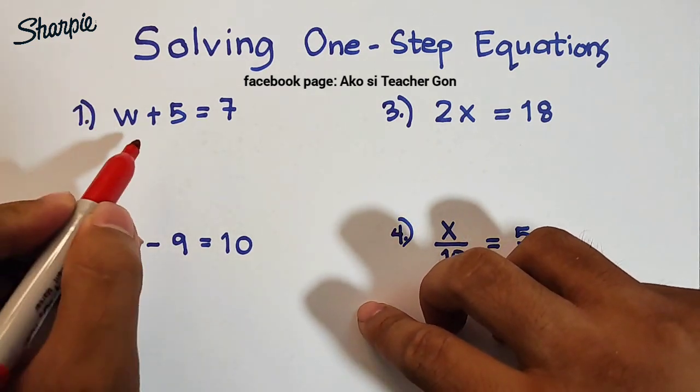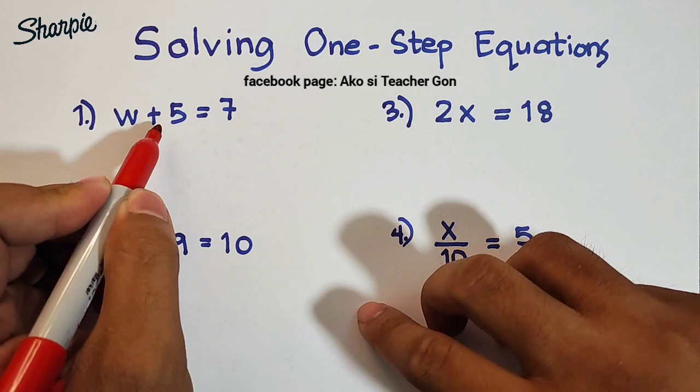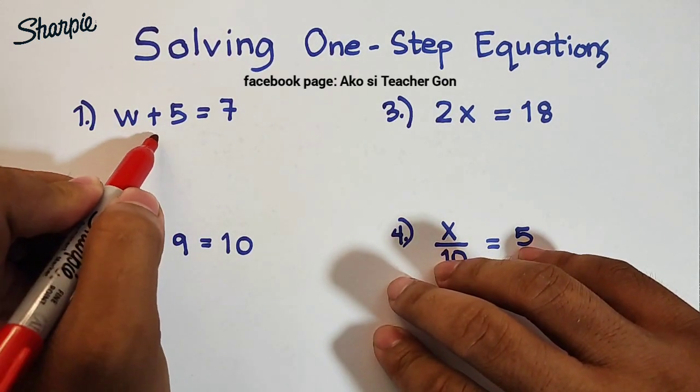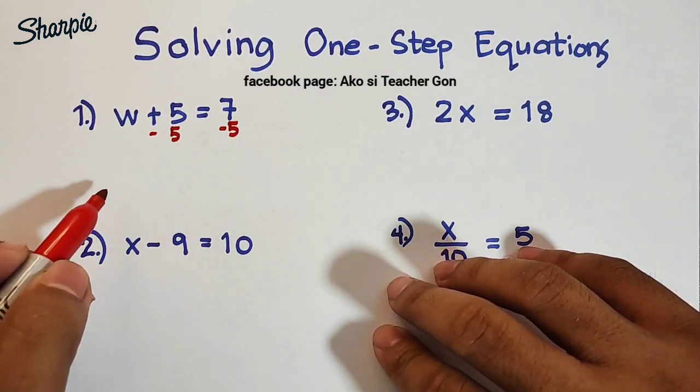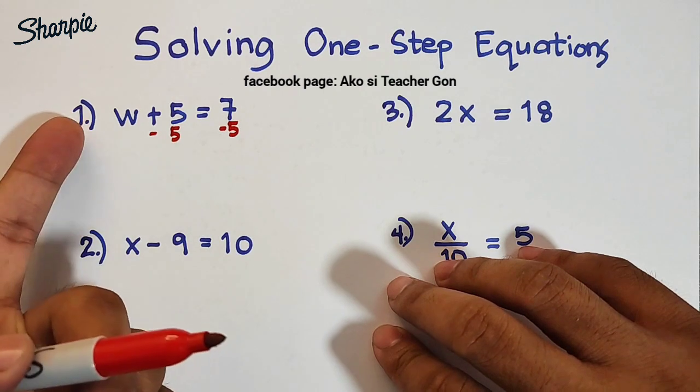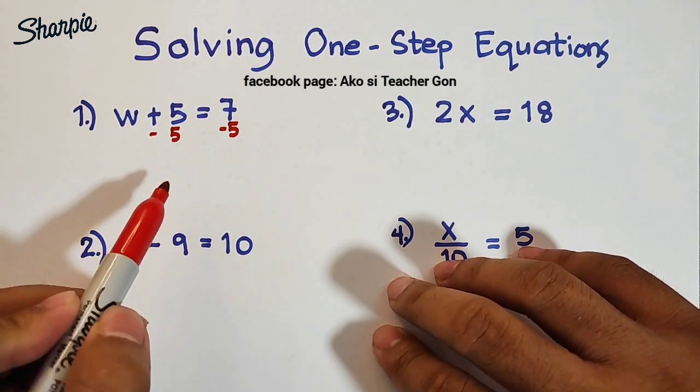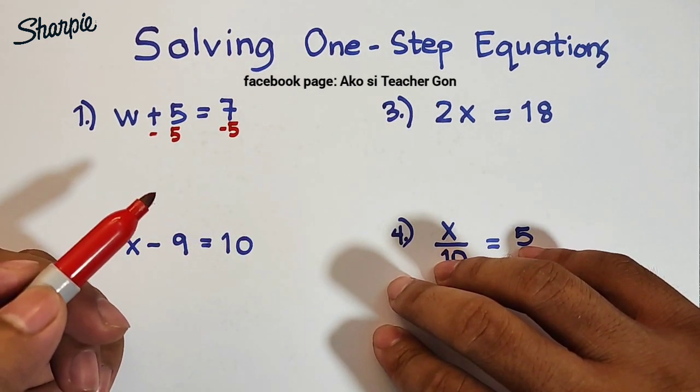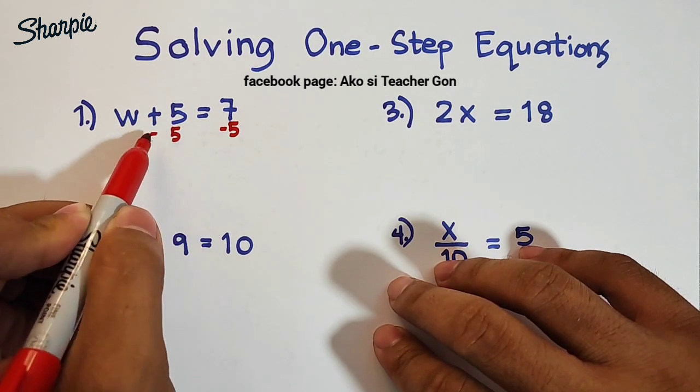For us to figure out what is the solution, or what will make this equation w + 5 equal to 7, let's start. First we need to eliminate 5, so to eliminate 5 we need to subtract 5 from both sides of the equation. So we will subtract 5 here and also here. I'm doing it vertically. Some content creators or people solving this kind of equation do this horizontally, but in our case we will do this vertically.